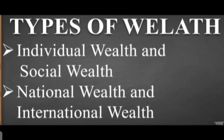Now in the types of wealth, we are going to study four types: individual wealth, social wealth, national wealth, and international wealth. The first is individual wealth — this is wealth under the ownership of an individual and means for private consumption. It is used by that particular person only, as he acquires a particular item by paying money, and that consumption is done by the individual itself. An example of individual wealth is a house.